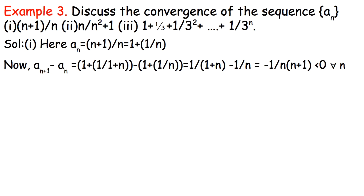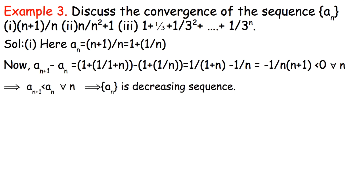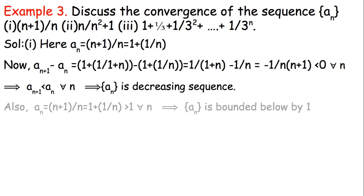To check monotonicity we take the difference AN+1 − AN. Computing (1 + 1/(N+1)) − (1 + 1/N), the 1's cancel and we get 1/(N+1) − 1/N. Taking the common denominator N(N+1), the numerator becomes N − (N+1) = −1, giving −1/[N(N+1)]. For any natural number N this is negative, so it is a decreasing sequence.